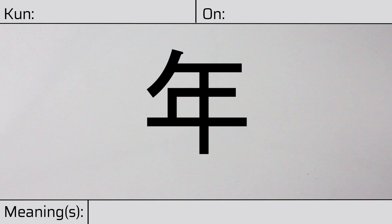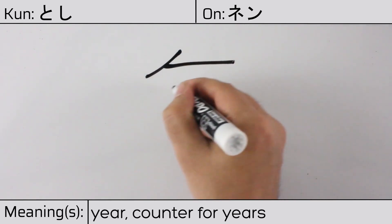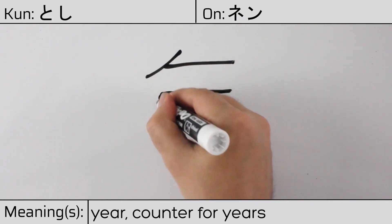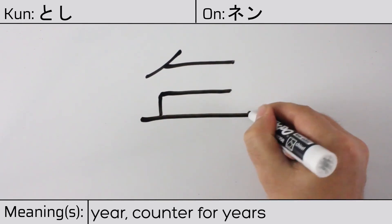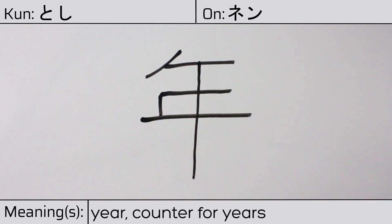Welcome to this lesson on Japanese kanji. Today, we'll be discussing this character. This kanji has kunyomi or Japanese reading of toshi, and it has an onyomi or Chinese reading of nen. This character has the meanings year, or is the counter for years. Here is the stroke order.